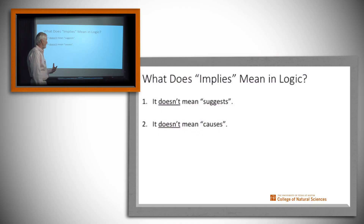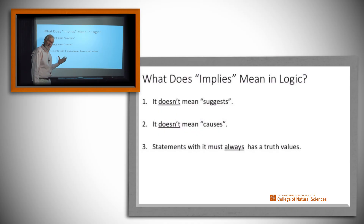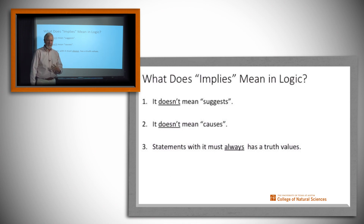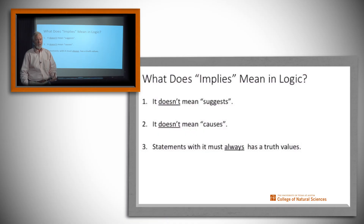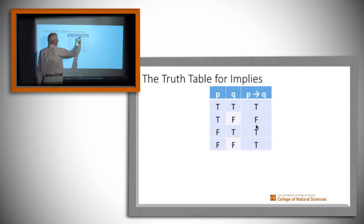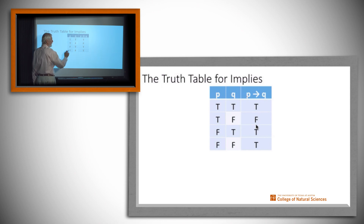In logic, we have to give every logical statement a truth value — recall that's the principle of the excluded middle. We're going to give truth values even in cases where many students would say it doesn't deserve one. Here is the truth table: we have a statement P implies Q, sometimes read as 'if P then Q.' We call P the antecedent and Q the consequent.